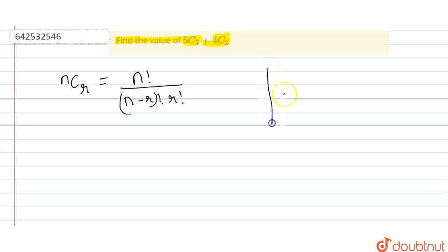What is factorial here? As we know, X factorial is equal to X into the next term which will be decreased by 1, which will be X minus 1 into X minus 2. It will go up to 3 into 2 into 1.